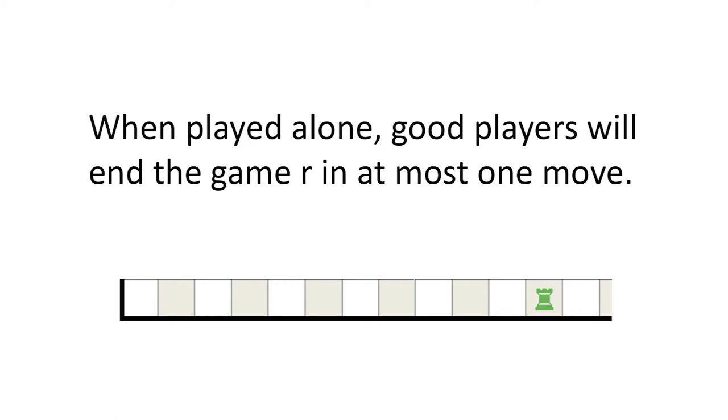When played alone, a well played game of baby rook lasts at most one move. The location of the end of the board is a circle. All other locations are check marks.